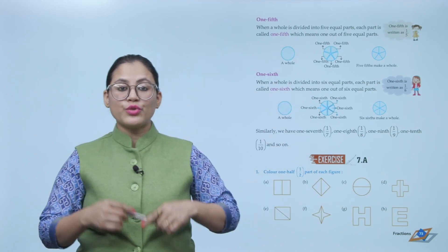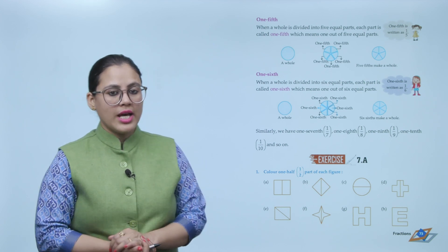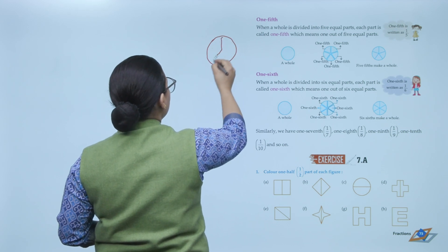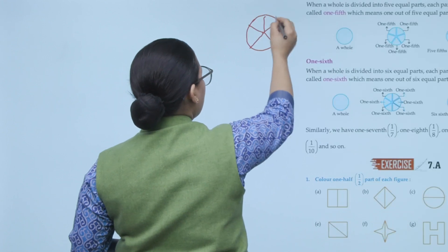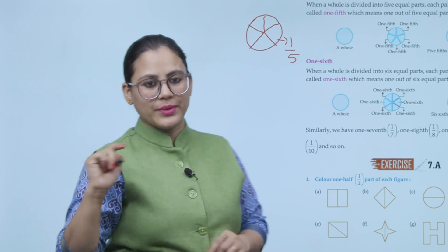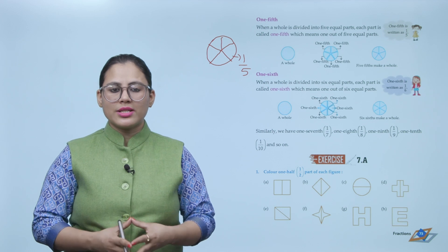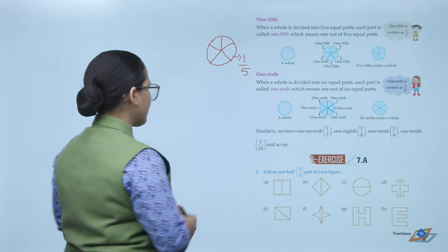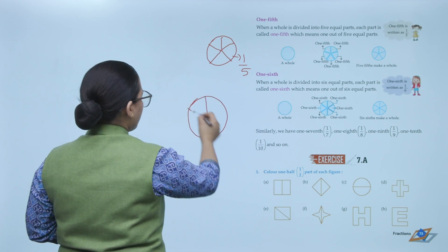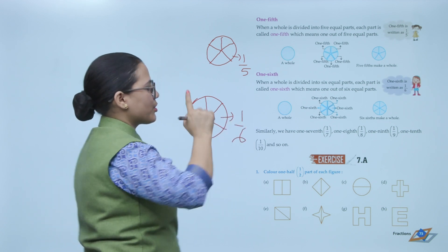One fifth: when a whole is divided into 5 equal parts, each part is called one fifth, which means 1 out of 5 equal parts. One sixth: when a whole is divided into 6 equal parts, each part is called one sixth, which means 1 out of 6 equal parts.